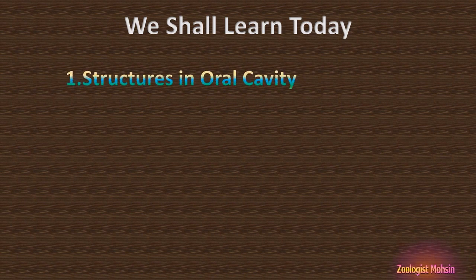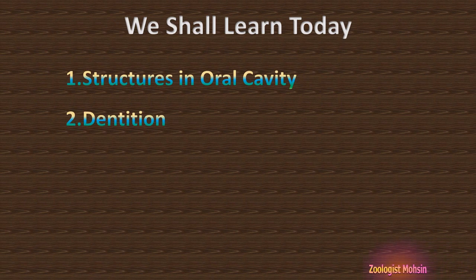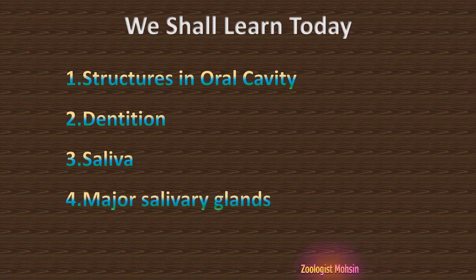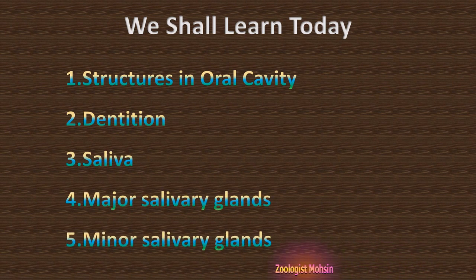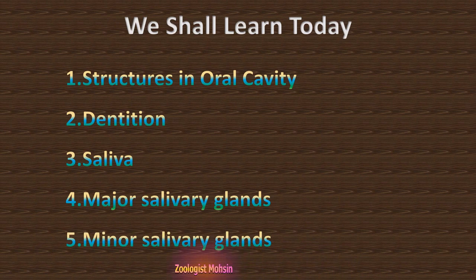Welcome to Zoologist Mohsen's YouTube channel — a place for to-the-point biology and zoology learning as well as exam preparations. Today's package includes: structures present in your oral cavity, types of dentition, types of teeth, what is saliva, major salivary glands, and minor salivary glands. Today's package is very important for exams as well as general information. Let's kick off.